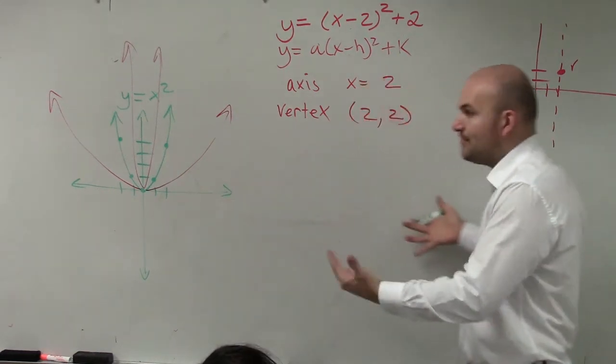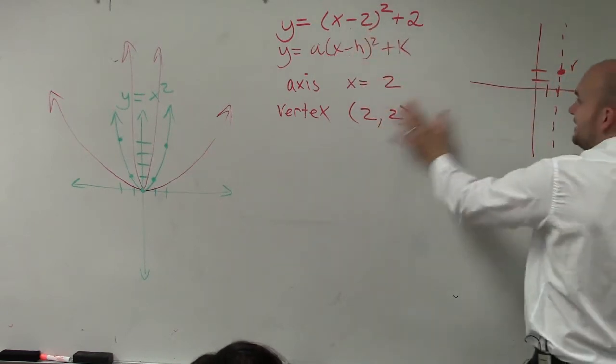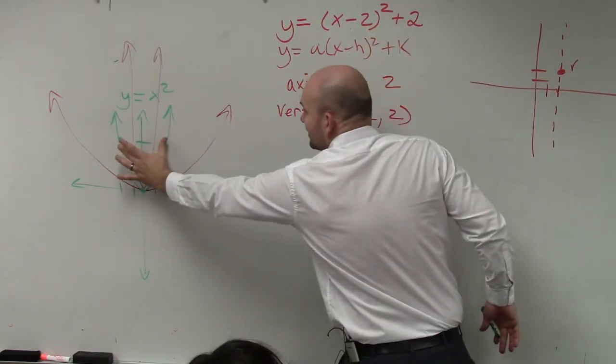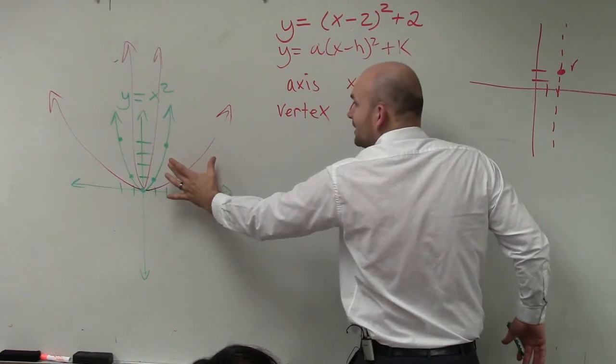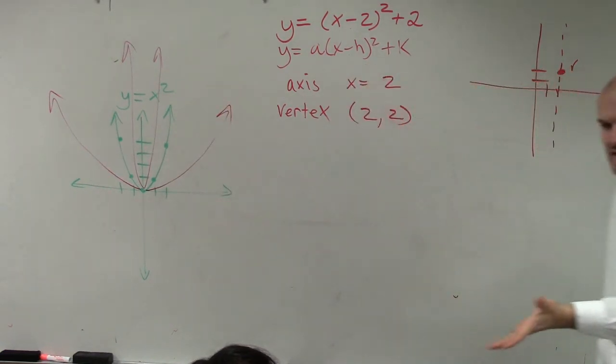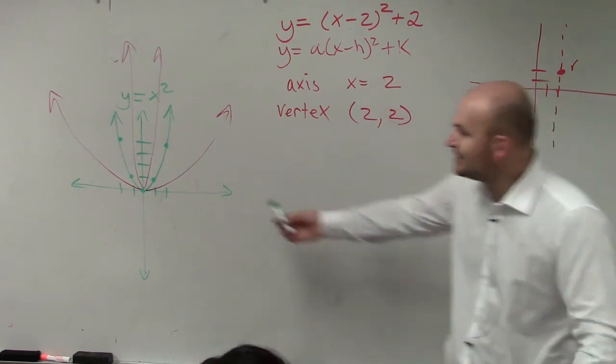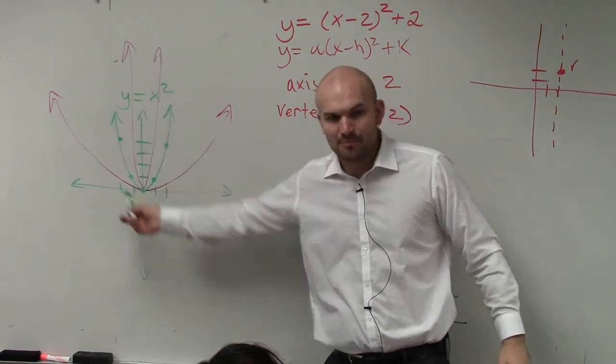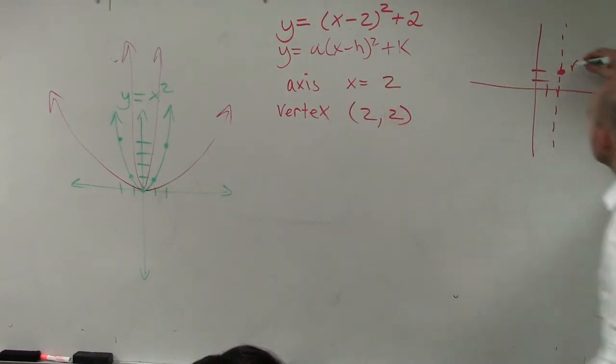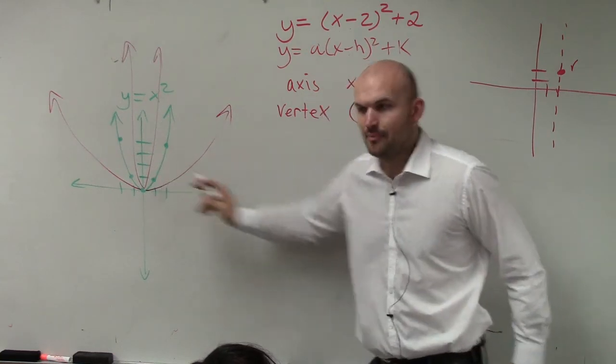So all I'm basically doing with these transformations is I'm literally just taking that green graph and shifting it two units to the right and two units up. The shape of the graph has not changed. So since the shape of the graph has not changed, there's no compression or stretching, I can use these same points. So I know here's the vertex. How do you get to the next point? You go over 1, up 1.